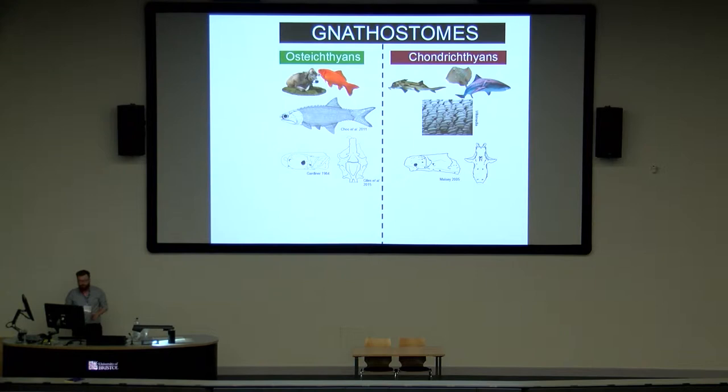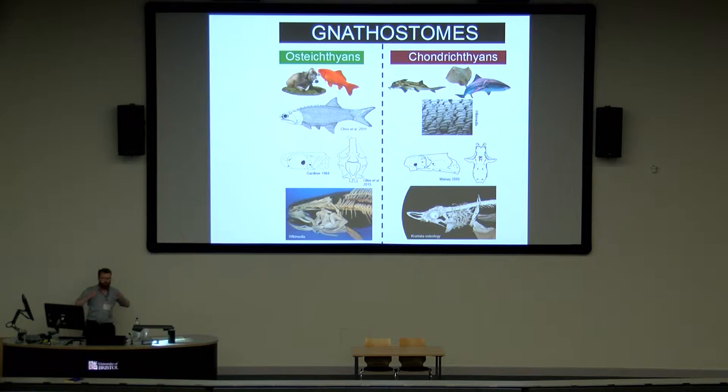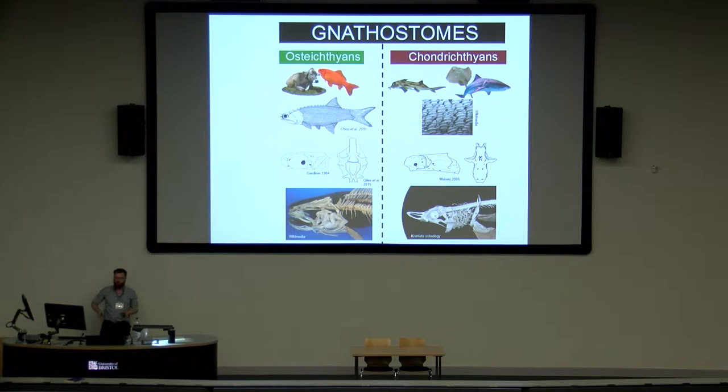Chondrichthyans tend to have a broad base to the neurocranium, whereas in osteichthyans it tends to be narrow. In osteichthyans, the gill skeleton is situated underneath the head — you can see in this cod the gill skeleton is obscured by those plates, illustrating that it's all underneath the head. Whereas in that shark, it's all behind the head, shunted back and extending caudally. Working out these endocranial differences is important for scenario building about how things evolved in the very early parts of jawed vertebrate evolution.